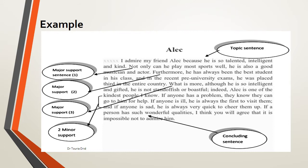If we see another text and we see two parts or three parts which contain indentations, we automatically understand that there are two points or three points according to the number of indentations. This is about the format.